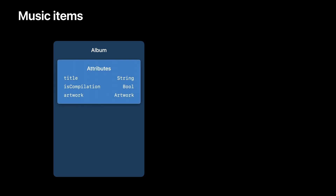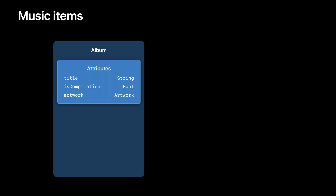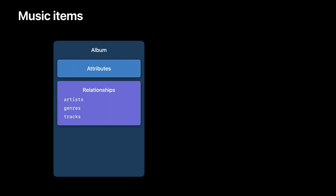So what do these music items look like? Let's take a look at a specific example with an album. Album is a value type with properties grouped in three different categories. The first category contains simple attributes, such as a string property like title, a Boolean property like is compilation, or more structured properties like artwork, which gives you access to URLs for the artwork, alongside relevant sizing information and related colors. Album also offers several relationships, such as related artists or genres, or the list of tracks in a given album.